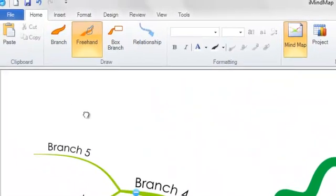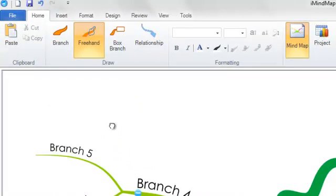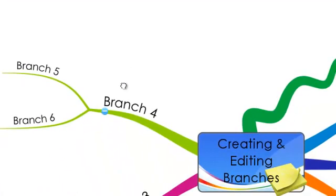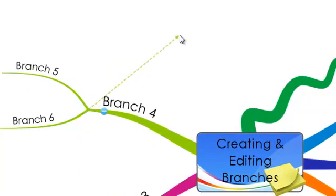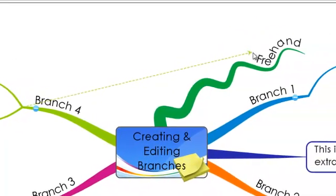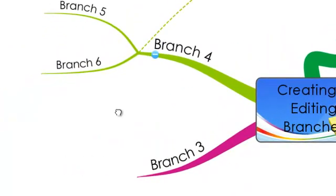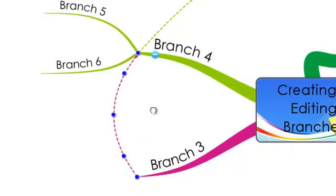If you want to show that two ideas are related or will impact upon each other, you can do this by creating a relationship. Simply select a relationship from the top toolbar, find the red dot at the end of the first branch and then drag the arrow that will appear to the related branch until the target appears. Then release and you can see that your relationship will have been drawn between the two branches. You can add text to a relationship the same way as you can any other branch — simply type and hit enter when the relationship is active.